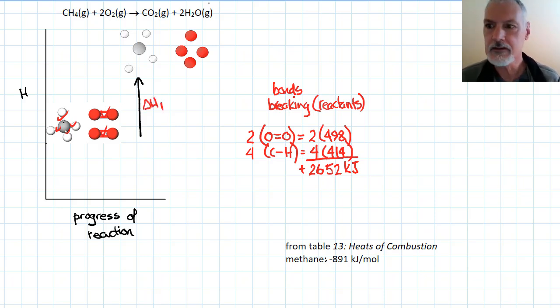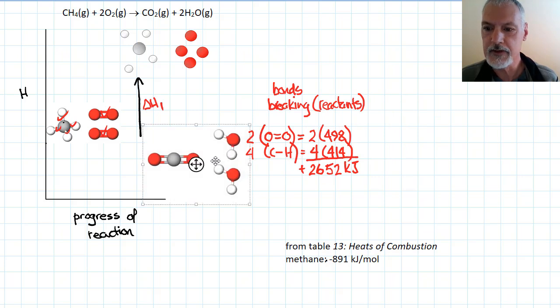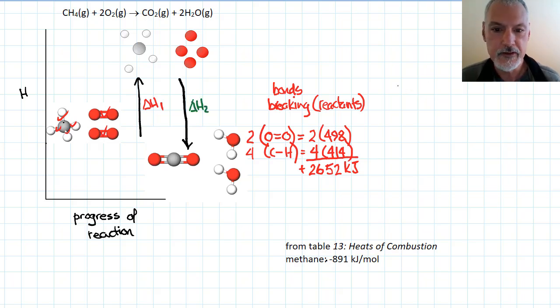The next thing I'm going to do is take those individual atoms and reassemble them now in my product. Now, this particular step, going from here to here, gives off energy as we form bonds. So I'm going to call that delta H2. So this is the bonds forming step, which releases energy and it deals with my products.